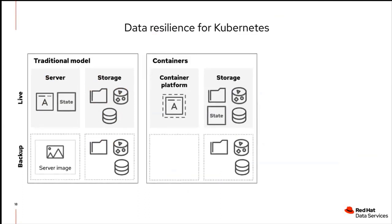With the shift to container platforms, there's no longer server state to back up — no operating system backup — because a container platform can be rebuilt anywhere. Containers run from immutable images from a registry; as long as you have registry access, you can rebuild the platform and run containers again. However, containers do have state, captured in a persistent volume. That persistent volume lives on external storage and also needs to be backed up. And you need to track the correlation between containers and their persistent volumes.